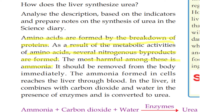Ammonia should be removed from the body immediately. The ammonia formed in the cells reaches the liver through blood. In the liver, ammonia combines with carbon dioxide and water in the presence of enzymes and is converted into urea.